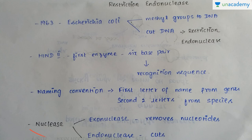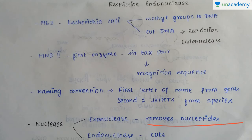All these belong to a large class of enzymes called nucleases. It is of two types: exonucleases and endonucleases. Exonucleases remove nucleotides from the end of the DNA sequence, and endonucleases cut the DNA at specific sites. So far, 900 enzymes have been extracted from 230 strains.